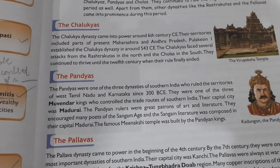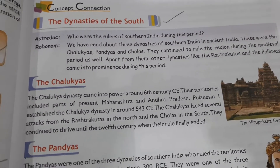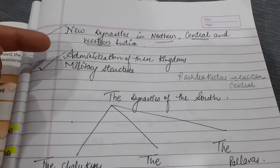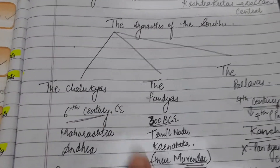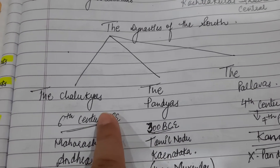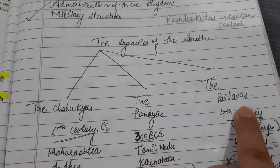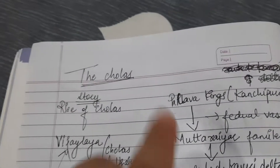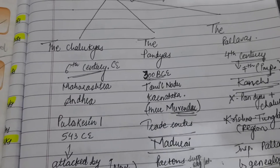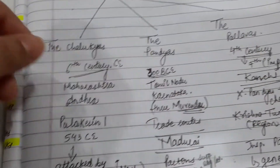Let's see who were the dynasties of the south during the medieval period - who came into rise and who fell during these periods. The dynasties of the south include the main three empires: the Chalukyas, the Pandyas, and the Pallavas. There is one more who enjoyed power, and that was the Cholas. So we're going to study all four - first the Chalukyas, the Pandyas, and the Pallavas.